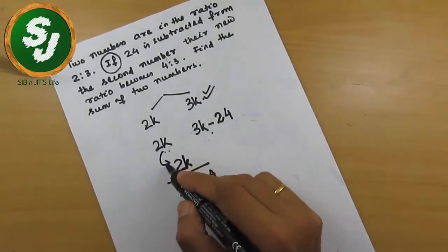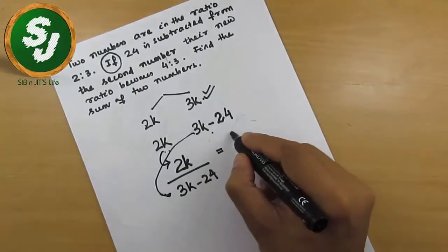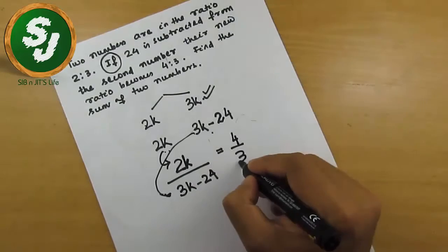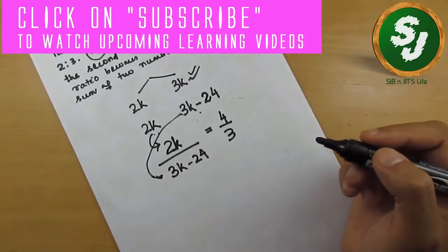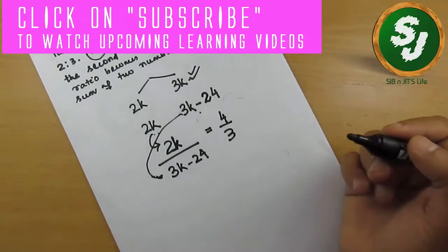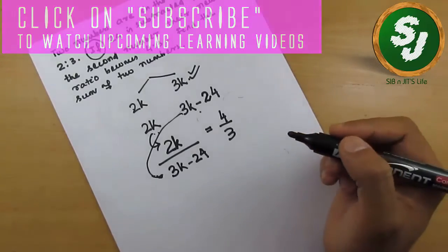is this number and 3k minus 24 is this number. It has come from here and their ratio becomes 4 by 3. This was given in the question. Now our ultimate objective is to find the value of k, and after that we can find the answer, whatever is asked in this question. So to solve this